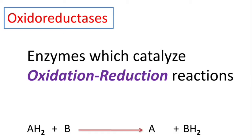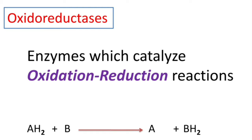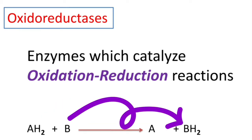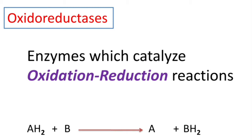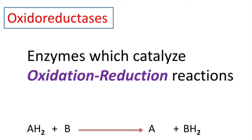Coming to oxidoreductases — the name itself indicates these enzymes catalyze reactions where oxidation-reduction of a substrate takes place. For example, substrate AH2 is a reduced substrate and B is the oxidized substrate. When oxidoreductase catalyzes this reaction, it converts AH2 into A and B into BH2 — an oxidation-reduction reaction.